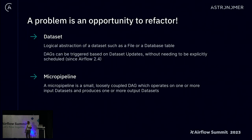Just to go back to definitions: what is a dataset? A dataset — we introduced this in Airflow 2.4 — is a logical abstraction of some data which may exist in some system. Typically it's a file or a database table. DAGs can now, since 2.4, be triggered as part of an update to a dataset, which can trigger further DAGs and pipelines. We define the term 'micropipeline' as processing one or more input datasets and creating one or more output datasets — similar to the concept of having a module or class, invoked independently, towards building loosely coupled data pipelines.